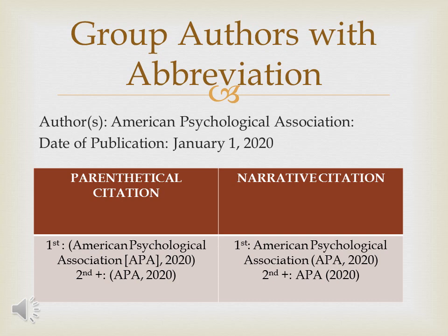That is for the first time you cite them. But if you want to cite them again — a second, third, or fourth time — you no longer need to include their full group name. What you need to do is open and close parenthesis, just the abbreviation APA, comma, then 2020. This applies only if you will mention them again in your academic paper. But if you only cite them once, include the full name, square bracket with the abbreviation, and the date of publication.